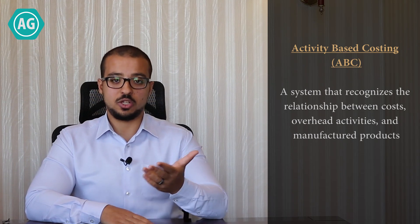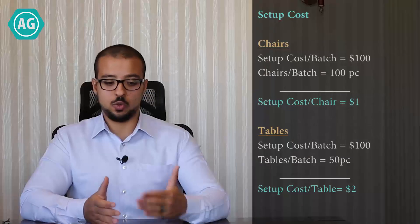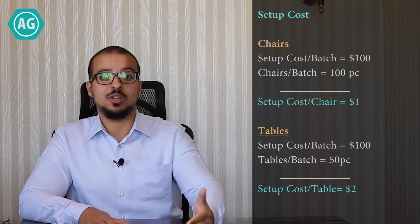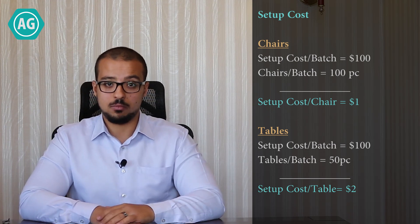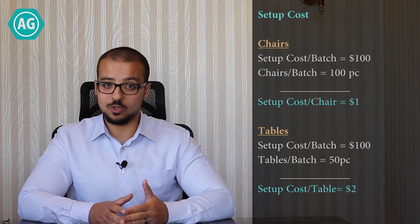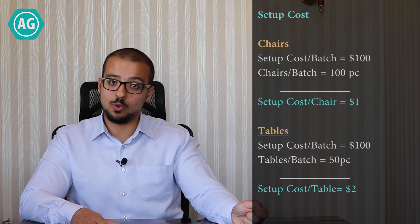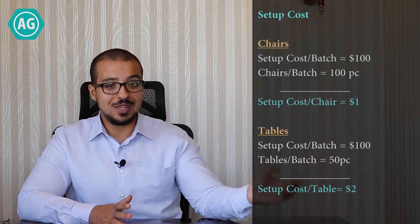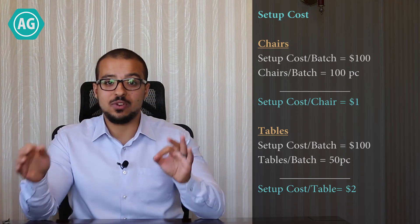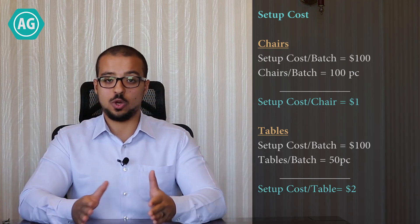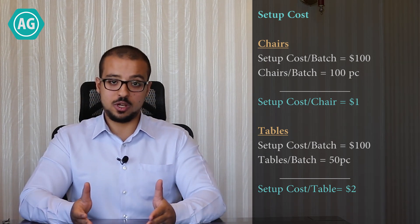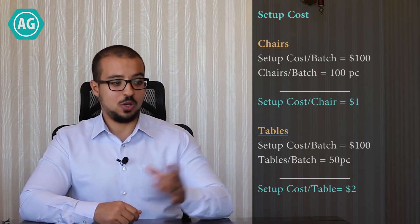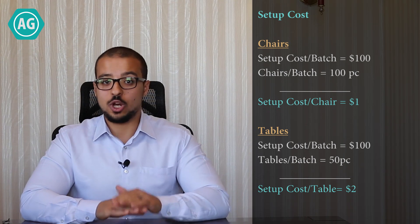There is also another example: setup cost. Every time we make a batch of chairs, we have to shut down the machine, switch it to chair mode, and leave it to heat up for 30 minutes — costing around 100 USD. The same applies to tables. So we allocate this 100 USD to the number of units we produce in every setup. If we manufacture 100 chairs in a setup, then each chair has a setup cost of 1 USD.